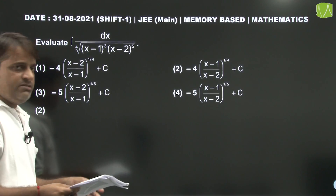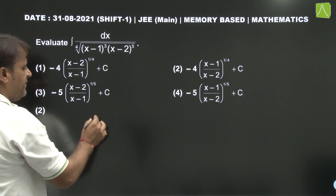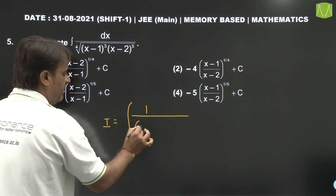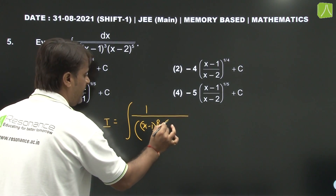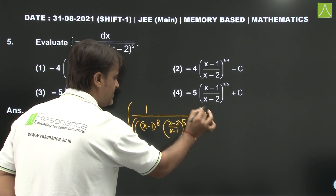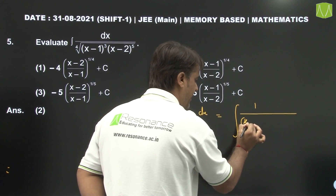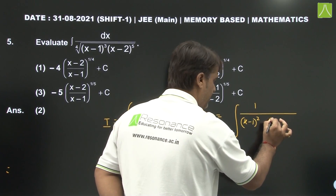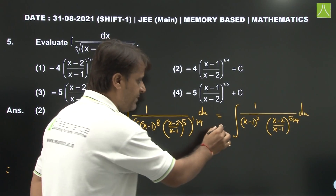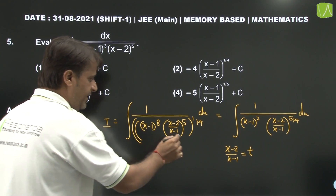Question number 5: Indefinite integration question. I equals integration of 1 upon (x minus 1)^8 times [(x minus 2) divided by (x minus 1)^5]^(1/4) dx. Rewritten and simplified. Substituting (x minus 2) divided by (x minus 1) equal to t.